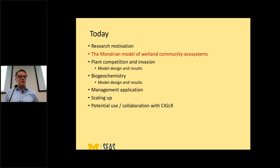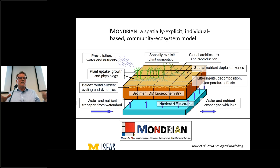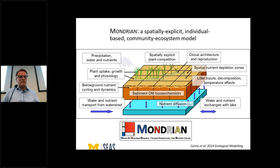The model is spatially explicit and individual-based, modeling each individual plant. There can be up to 10,000 plants in a square meter, operating at a scale of about one square meter — sometimes a quarter square meter. The area is divided into grid cells, each with a different nutrient level, so plants in each grid cell experience different conditions. There's spatially explicit plant competition, clonal architecture, and clonal reproduction — these plants are connected below ground and can reproduce clonally with branching.